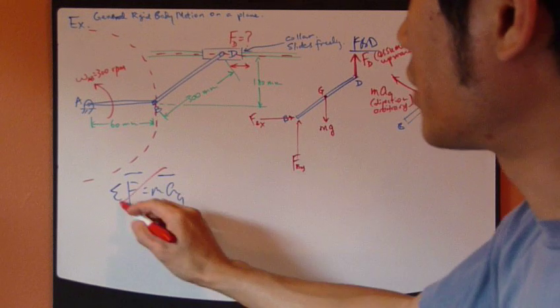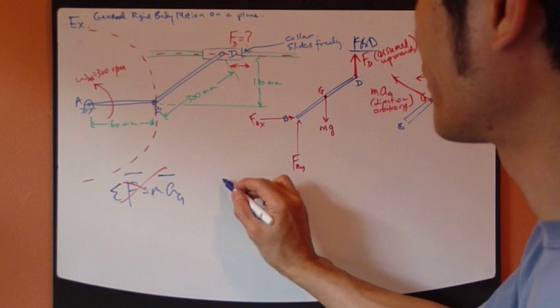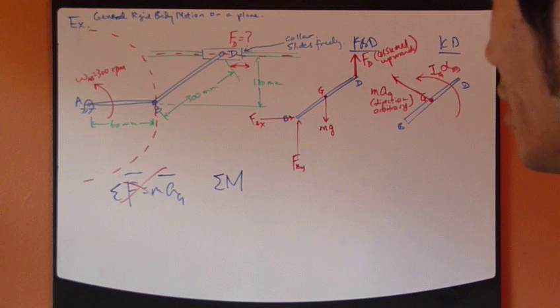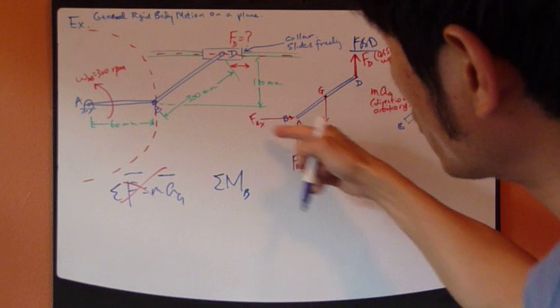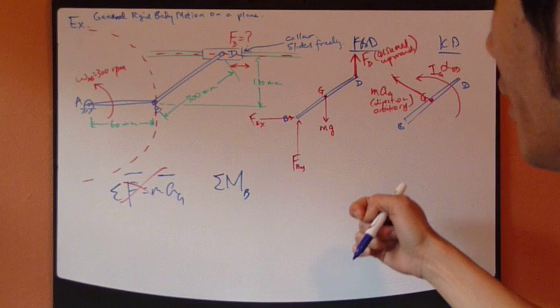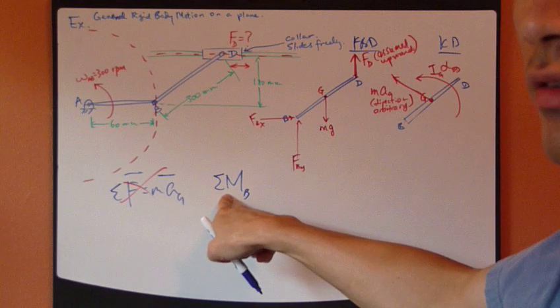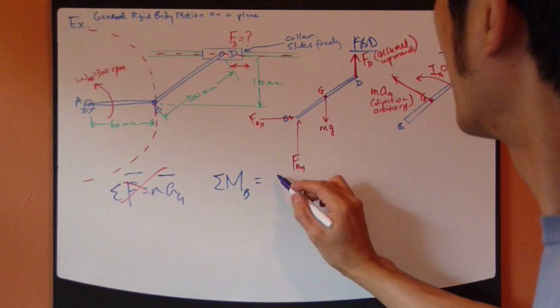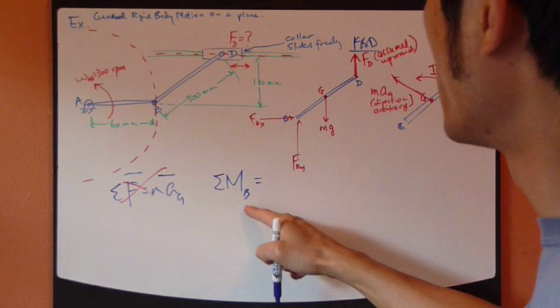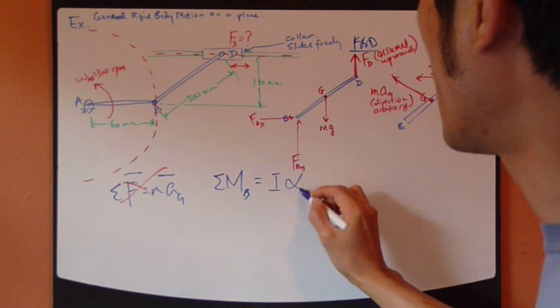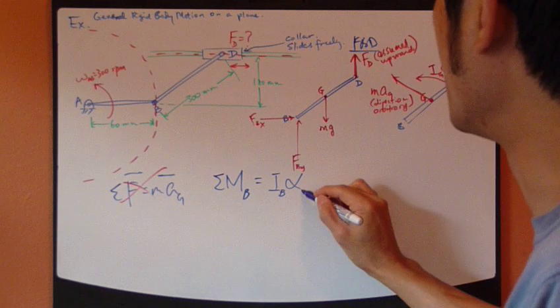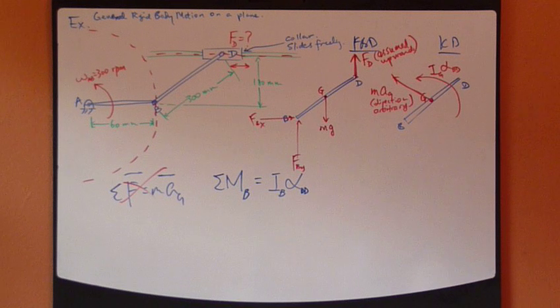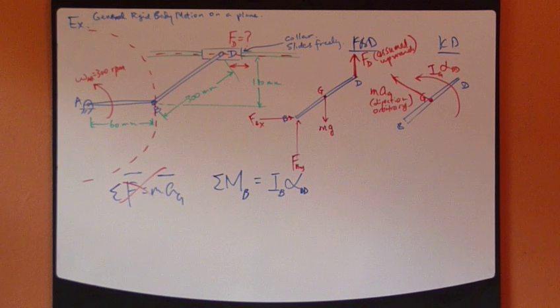So the only way to avoid that is by finding the sum of moment equation at point B. Point B is where these two extra unknowns pass through and they drop out of this equation eventually. So sum of moments at point B equals I-alpha at point B, and alpha of BD. And then we can just expand left-hand side and right-hand side.